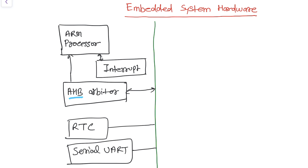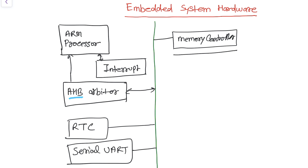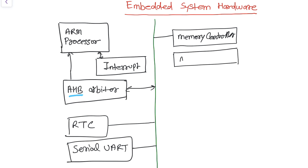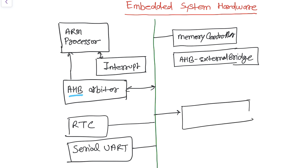This UART can be used to show data at a computer console. And then it has here another memory controller, which controls the memory. It also has an AHB Advanced High-performance Bus external bridge. This has an external bridge. And then finally, it has an Ethernet controller.